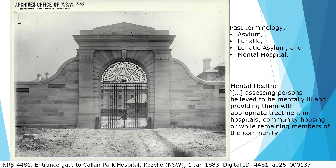You will notice terms such as asylum, lunatic, lunatic asylum, imbecile, idiot, and mental hospital used in both the records and in our finding aids. While they are not terms we would use today, they were used when the records were created. Stephen Garton commented that critical histories have connected the concept of lunacy to approaches in medical treatment, policing, social welfare, incarceration, poverty, and gender. These terms can help us understand how the concept of and approaches to the assessment of mental illness continues to change with society.